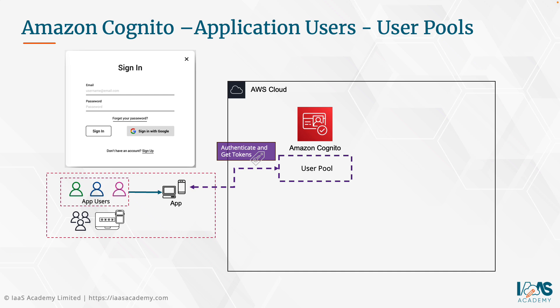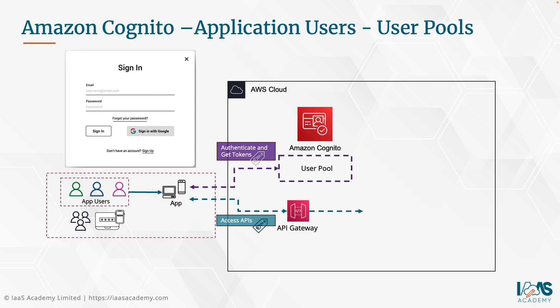With all configuration in place, users can access your application, authenticate against the Cognito platform, and obtain tokens. Those tokens can then be used to access APIs to backend applications using something like Amazon API Gateway, which ultimately gives access to backend services and APIs running on Lambda, containers, or EC2 instances. With the Amazon Cognito user pool service, you can provide authentication and create tokens to grant API access to backend applications on the AWS platform.